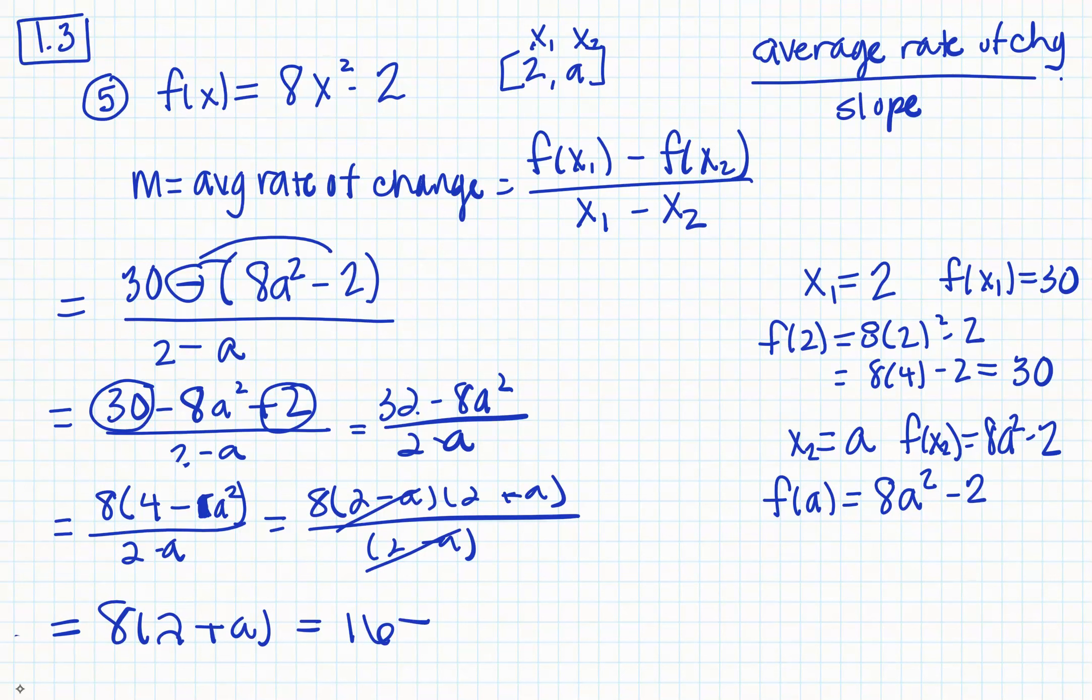And to finish that out, that gives me 16 plus 8a. So definitely a little bit tricky because of that variable a, and you had to factor with the difference of two squares. And be careful with your combining of like terms, because if you don't combine those like terms correctly, you're going to not have sufficient information in order to factor. So, hope this helps!